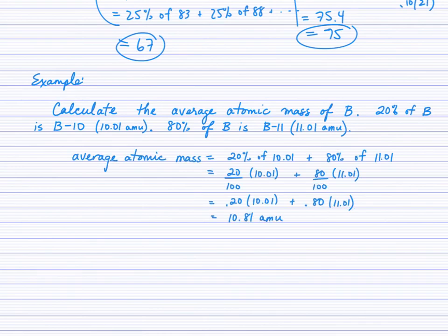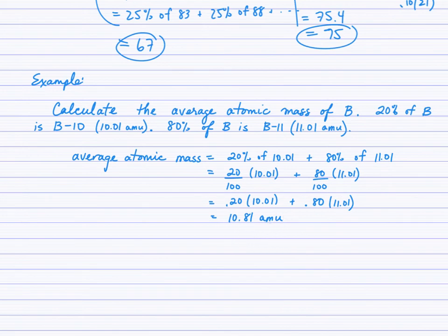The weighted average comes out to 10.81 atomic mass units. If you check the periodic table, that's what you should see as the average atomic mass of boron. This has been a short video on understanding how to calculate the average atomic mass of the atoms of a particular element.